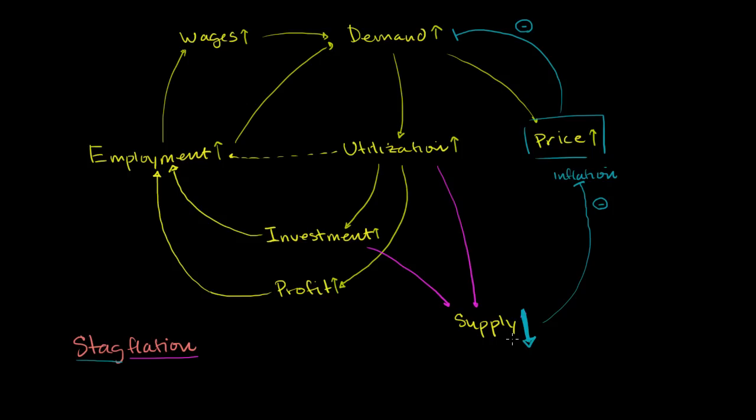And just think about how that would affect the rest of this chain. So if the supply of something dramatically goes down, we know that supply has an inverse relationship with price. So supply goes down, then bam, right there, you see price would immediately go up.